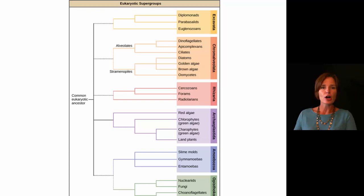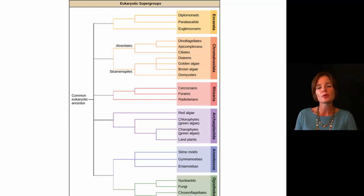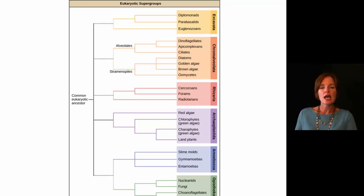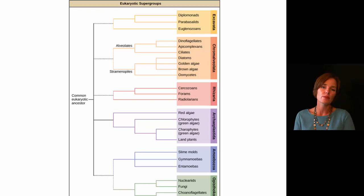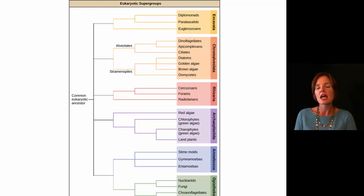Protists are actually scattered all over the evolutionary tree — some of them are more closely related to fungi or to plants. If we look at just the eukaryotes in general, the most commonly accepted scheme today groups them into six supergroups.